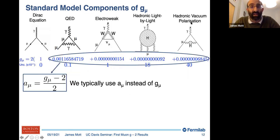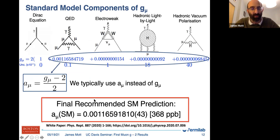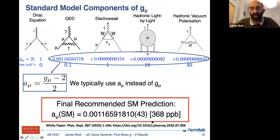All the new physics is in these hadronic and beyond-standard-model terms. Instead of talking about g, we talk about a_mu, which is just (g-2)/2. The final recommended prediction from the white paper is this value here, good to 368 parts per billion — slightly better precision than our result of around 460 parts per billion.